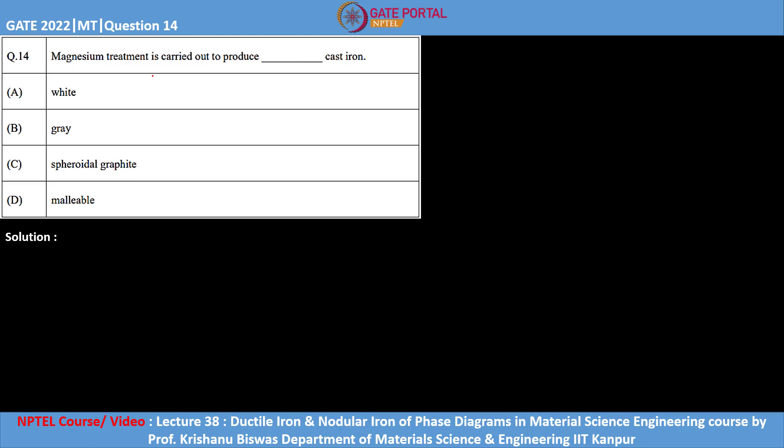To know more about the different types of cast iron and the treatment given to cast iron, you can refer to Lecture Number 38: Ductile Iron and Nodular Iron of Phase Diagram in Material Science Engineering course by Professor Krishanu Biswas from Department of Material Science and Engineering, IIT Kanpur.